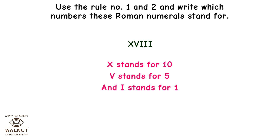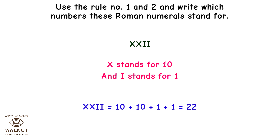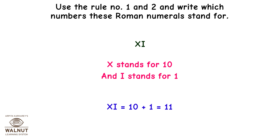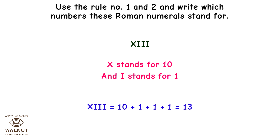X stands for 10, V stands for 5, and I stands for 1. Therefore, XVII is equal to 10 plus 5 plus 1 plus 1 plus 1, which equals 18. XXII: X stands for 10 and I stands for 1, so XXII is equal to 10 plus 10 plus 1 plus 1, which equals 22. XI is equal to 10 plus 1, which equals 11. XIII is equal to 10 plus 1 plus 1 plus 1, which equals 13.